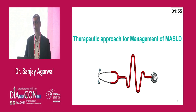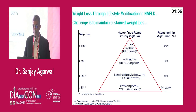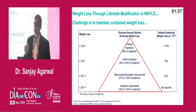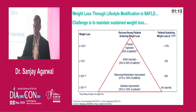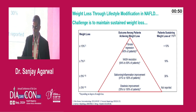The therapeutic approach is multi-pronged: lifestyle, diet, managing co-morbidities, pharmacotherapy, and bariatric surgery. Regarding weight loss and its liver effects: achieving ≥3% weight loss gives steatosis improvement; ≥5% gives ballooning and inflammation improvement, though only 30% sustain it at one year; ≥7% gives NASH resolution, but only 18% sustain it; and ≥10% can give fibrosis regression, but less than 10% sustain that weight loss at the end of one year.